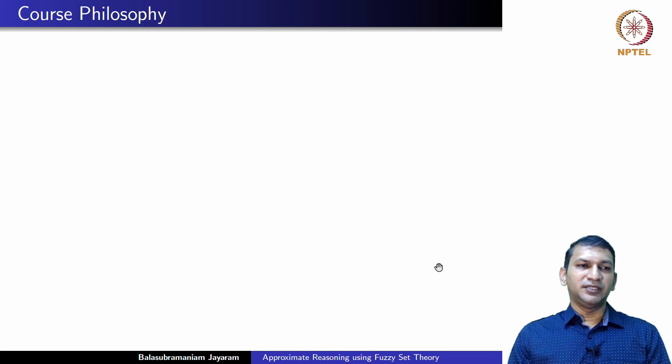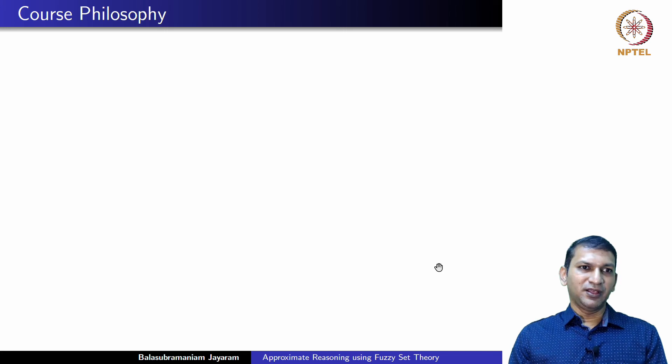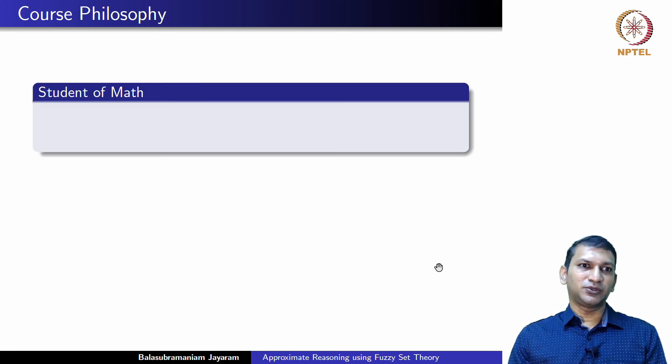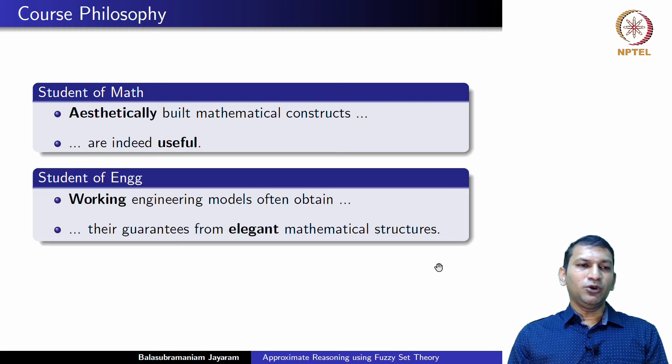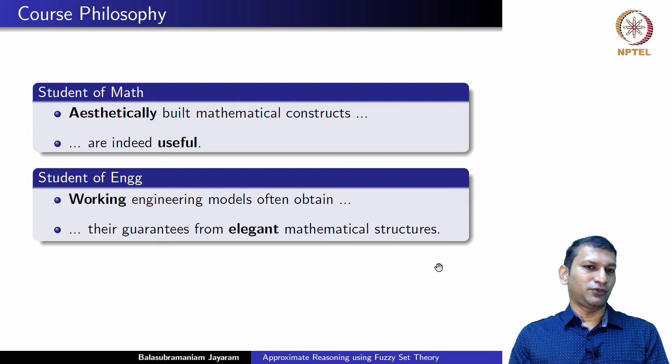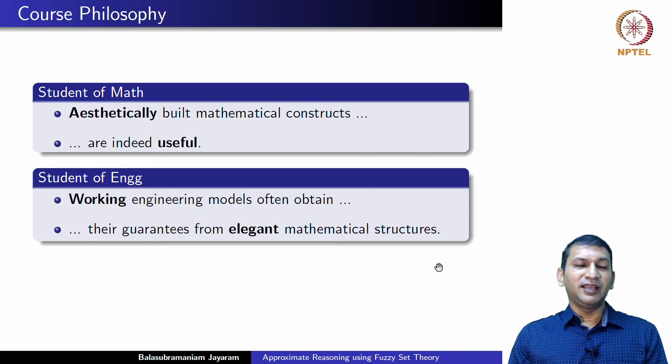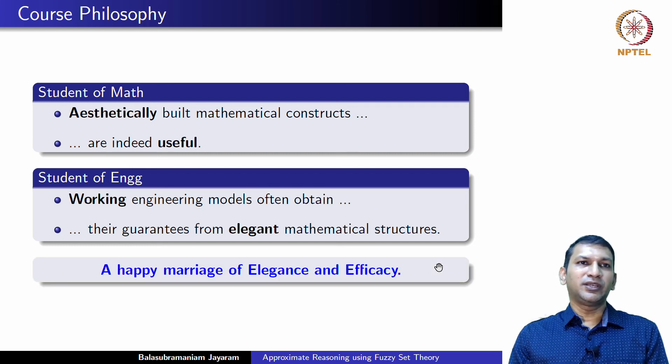A few words about the design philosophy of the course. As we have seen, we would like this course to be accessible to both students of mathematics and engineering. So, as a student of math, what can you expect from this course? We hope at the end of this course, you would appreciate how aesthetically built mathematical constructs are indeed useful. And if you are a student of engineering, we hope you would be able to see how the working engineering models that you propose and often obtain, they obtain their guarantees from elegant mathematical structures. In a sense, we would want this course to showcase a happy marriage between elegance and efficacy.